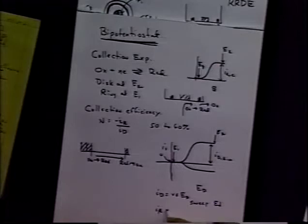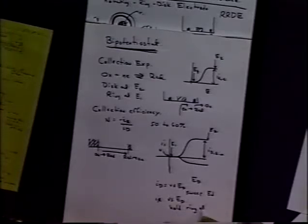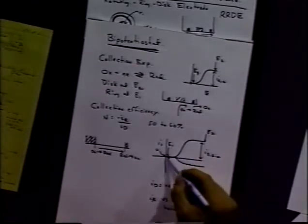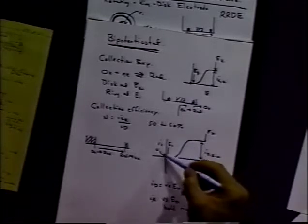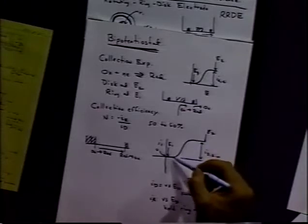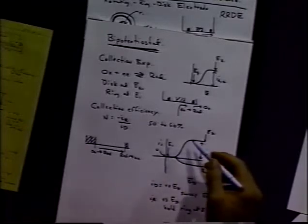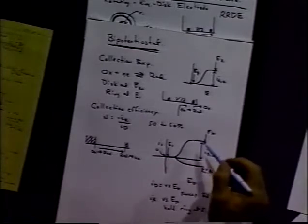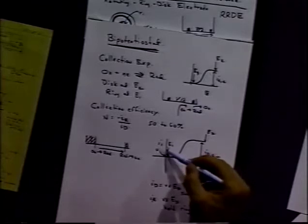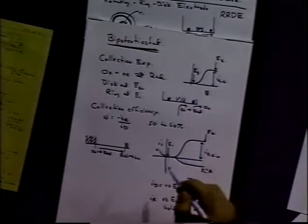If we set and then plot IR versus E sub D, and we hold the ring at E1, then we'll get a curve like this for I sub R, the ring current. In other words, we're sweeping the disk here and monitoring this potential. All the time we're sweeping the disk potential, we're holding the ring potential here. So as soon as something is oxidized or reduced at the disk, it's swept to the ring and undergoes an oxidation, because the potential is here. We'll see a current for that happening as soon as we see a current for the other process occurring.